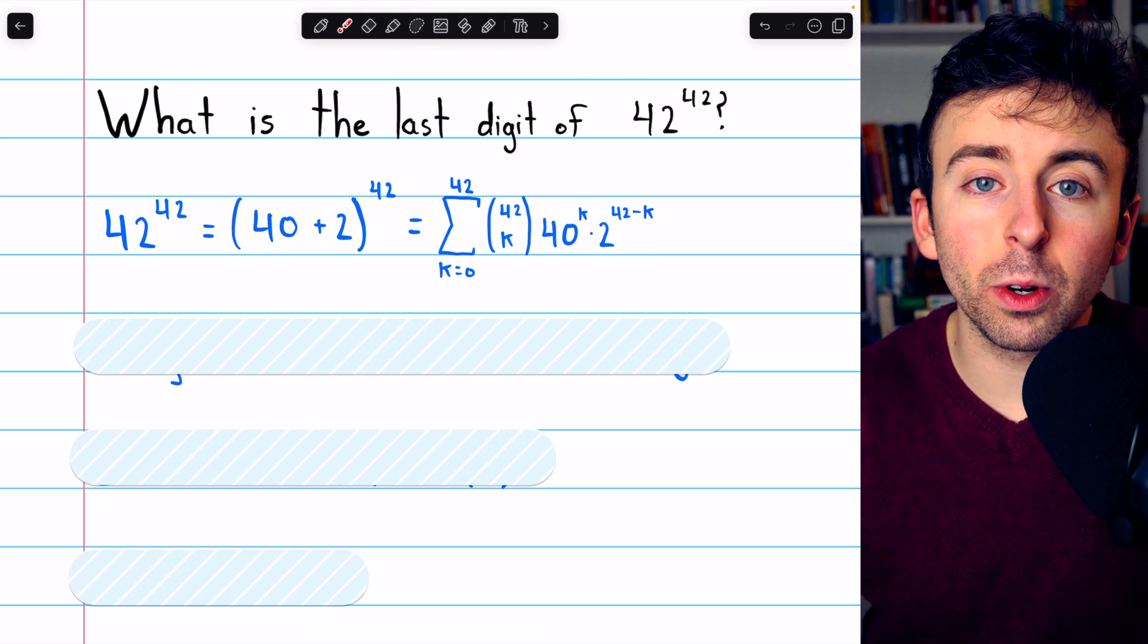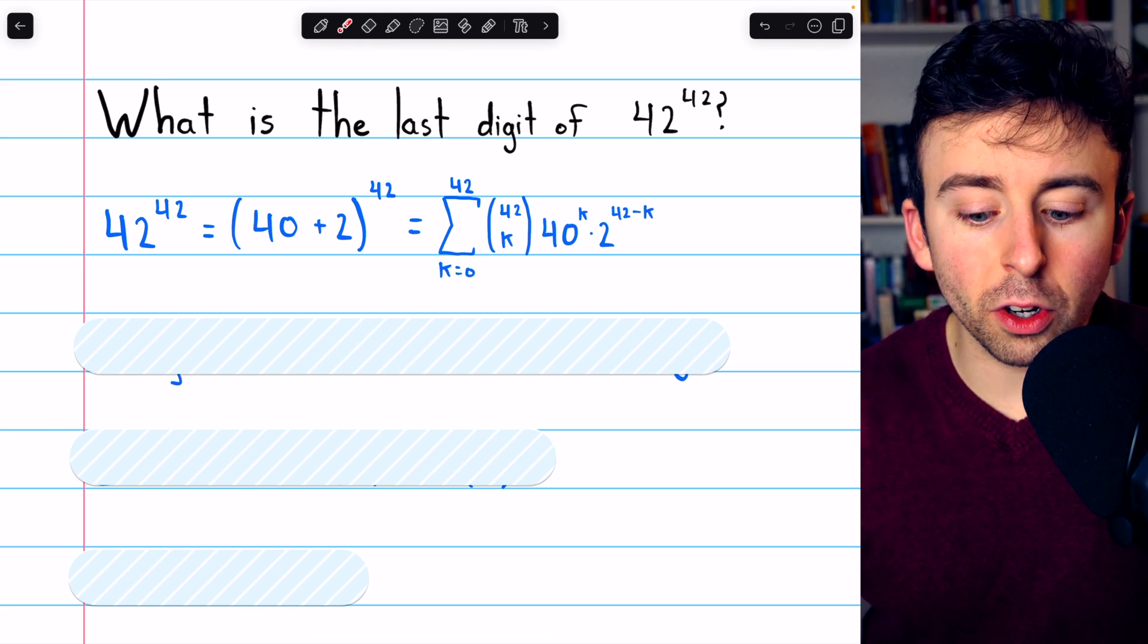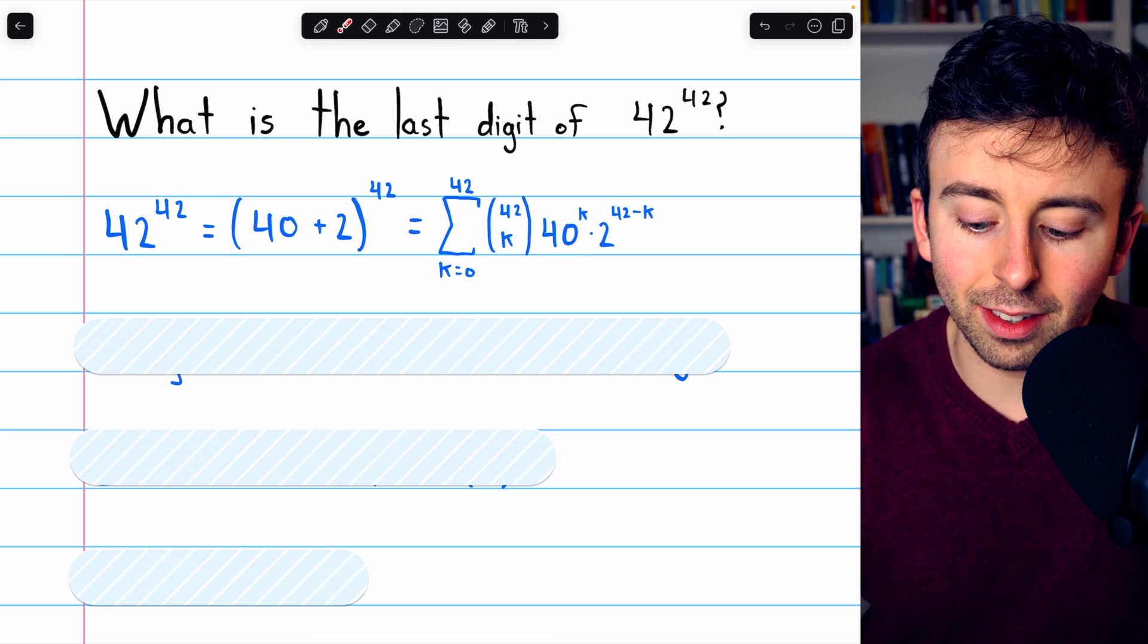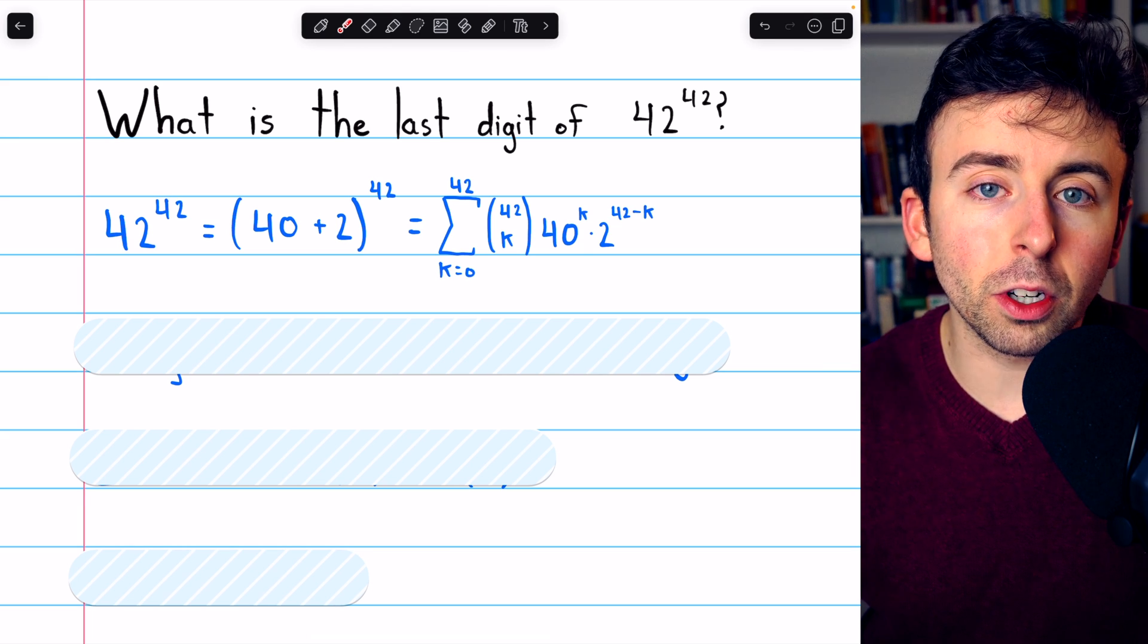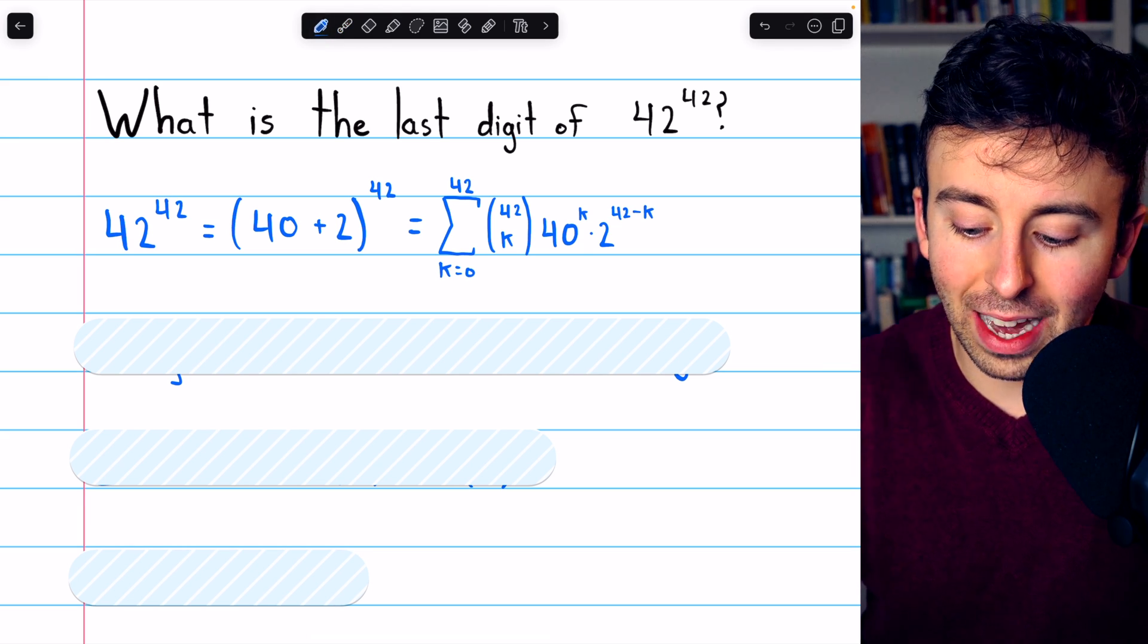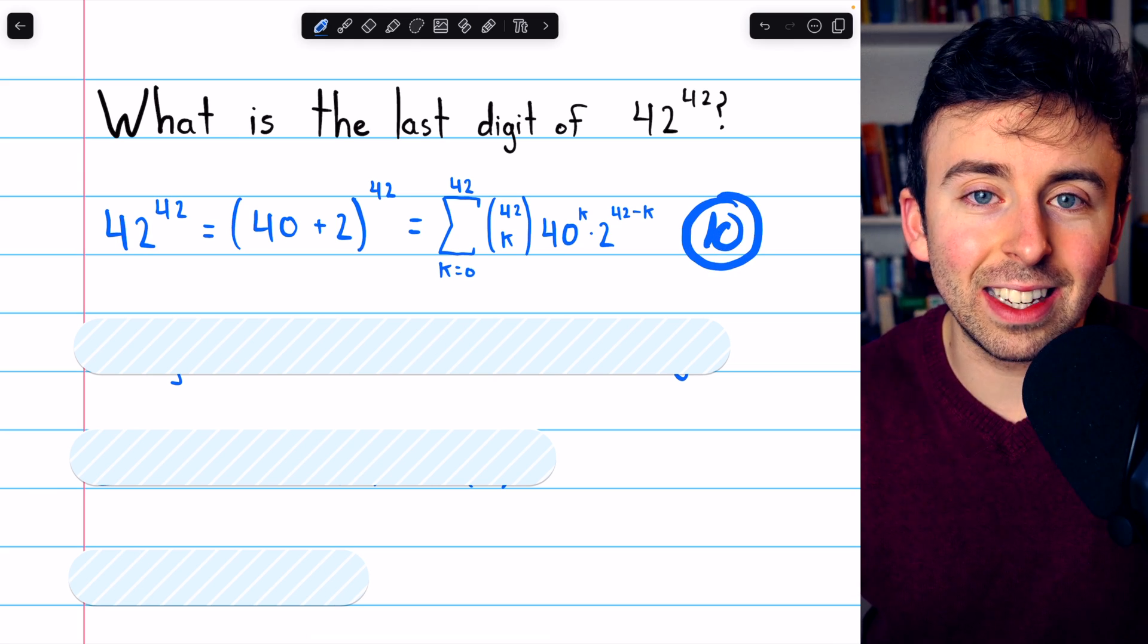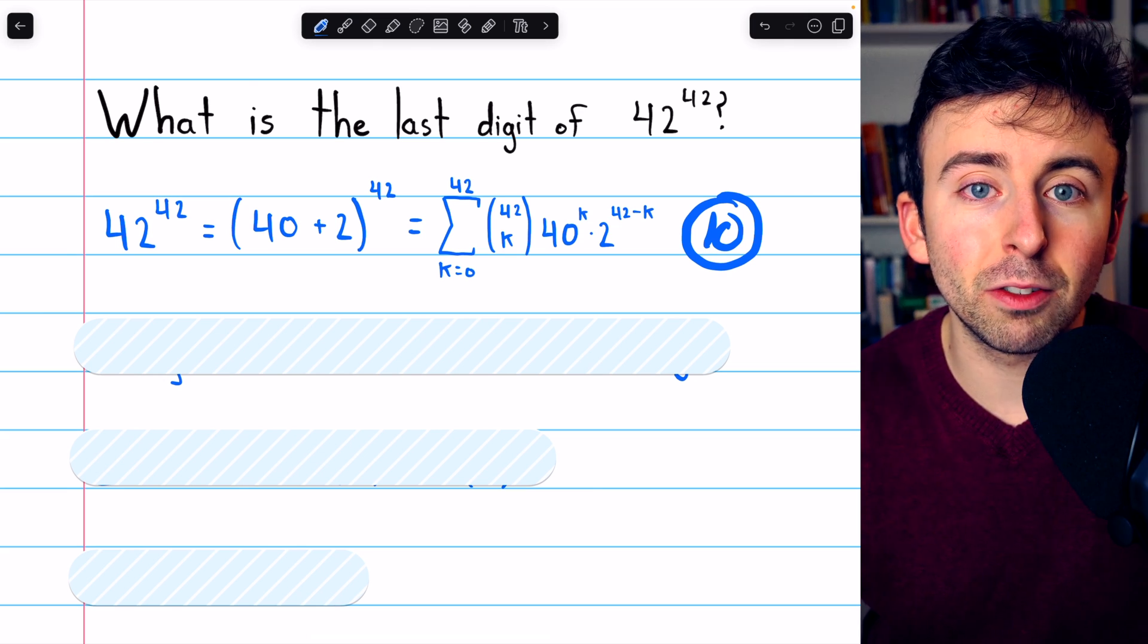Every term has a power of 10 after the first term. With the first term, k is equal to 0. So, in fact, there is no 40 because it's just 40 to the 0, which is 1. There's no factor of 10 there. But every other term after the first term will have a factor of 10, which means that it will have no impact on the unit's digit because if it's a multiple of 10, its unit's digit must be 0.